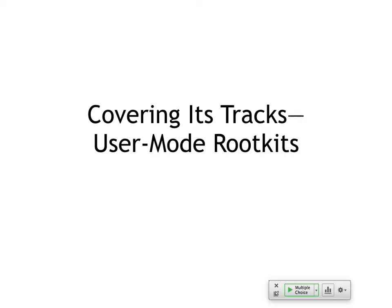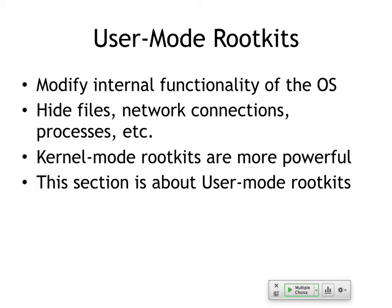Then there are user-mode rootkits. Rootkits in general want to hide things in the operating system — processes running, network connections made, files stored — all invisible. Your antivirus can't see them and you can't see them in your directory listing. Your machine can be used for something evil and you won't know. Kernel-mode rootkits are more powerful, but user-mode rootkits are more common because they're easier to write and install.